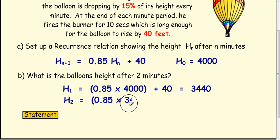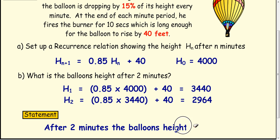H₂, take this value, multiply by 0.85 and then add 40, and we get 2964. Restatement: After 2 minutes the balloon's height is 2964 feet.